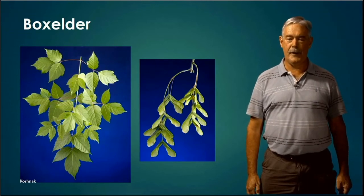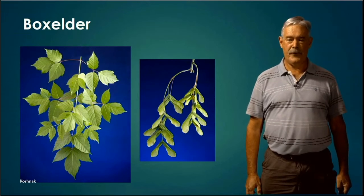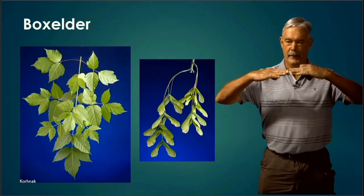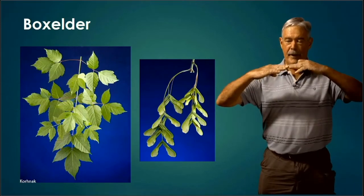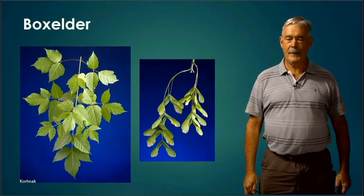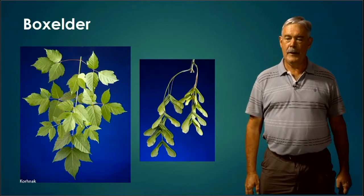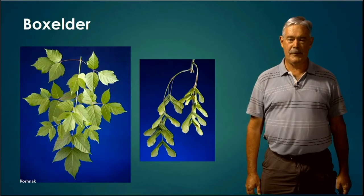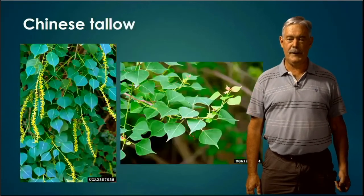You'll notice that those twigs come out from the twig there. The leaves come out opposite — right across from each other — in an opposite branching habit. And then we have a compound leaf with three or five leaflets. Sometimes when it has three leaflets, it looks quite a bit like poison ivy.